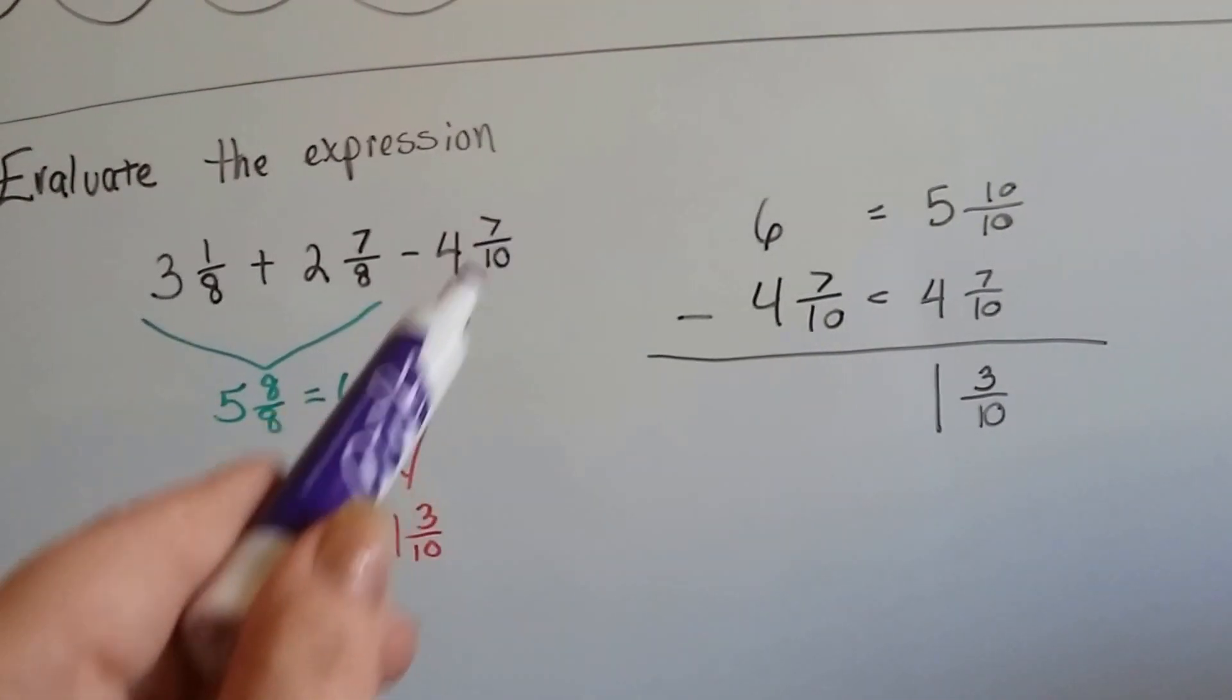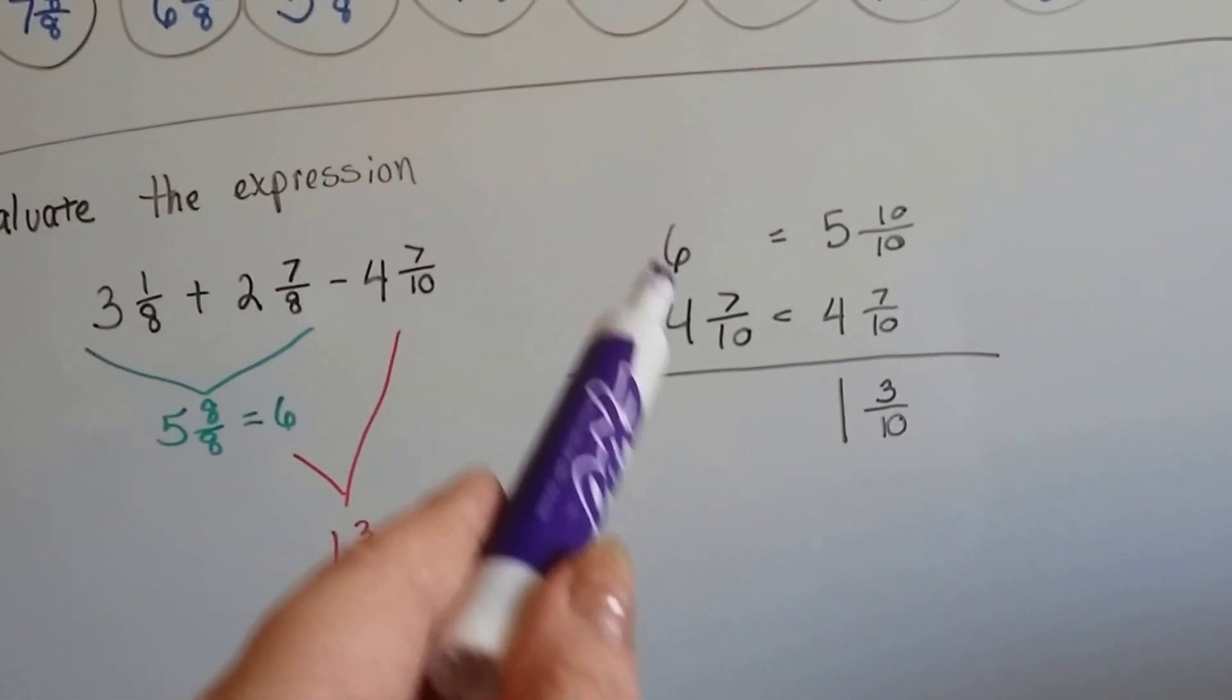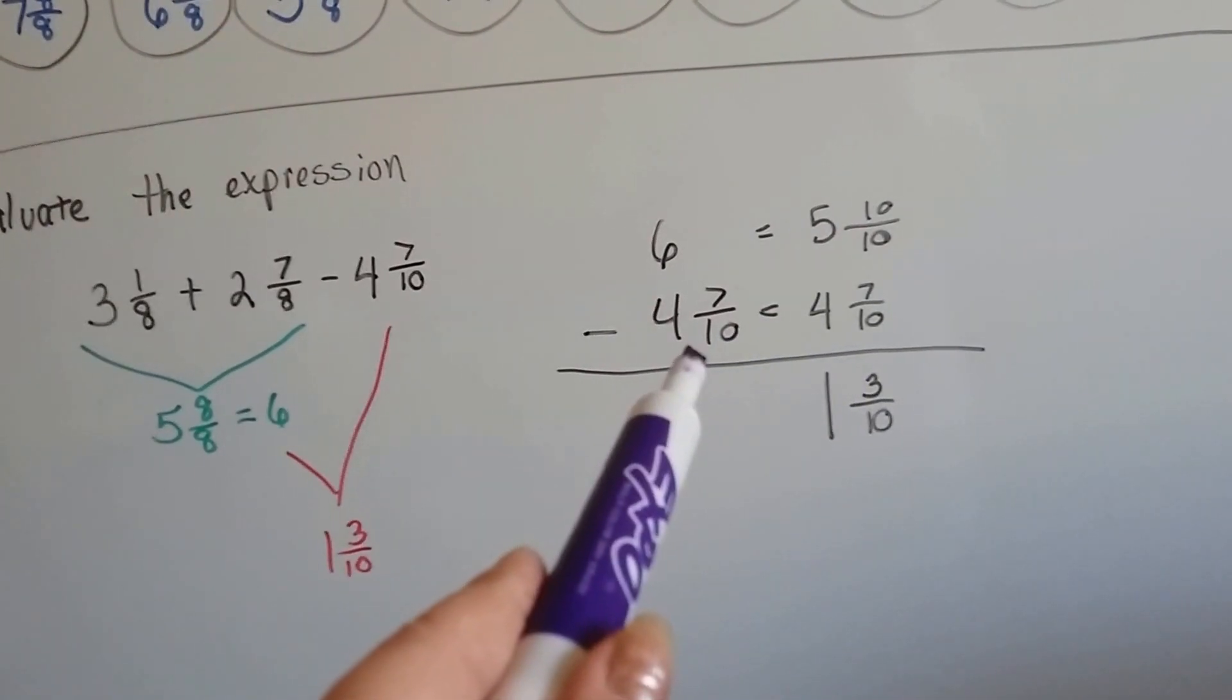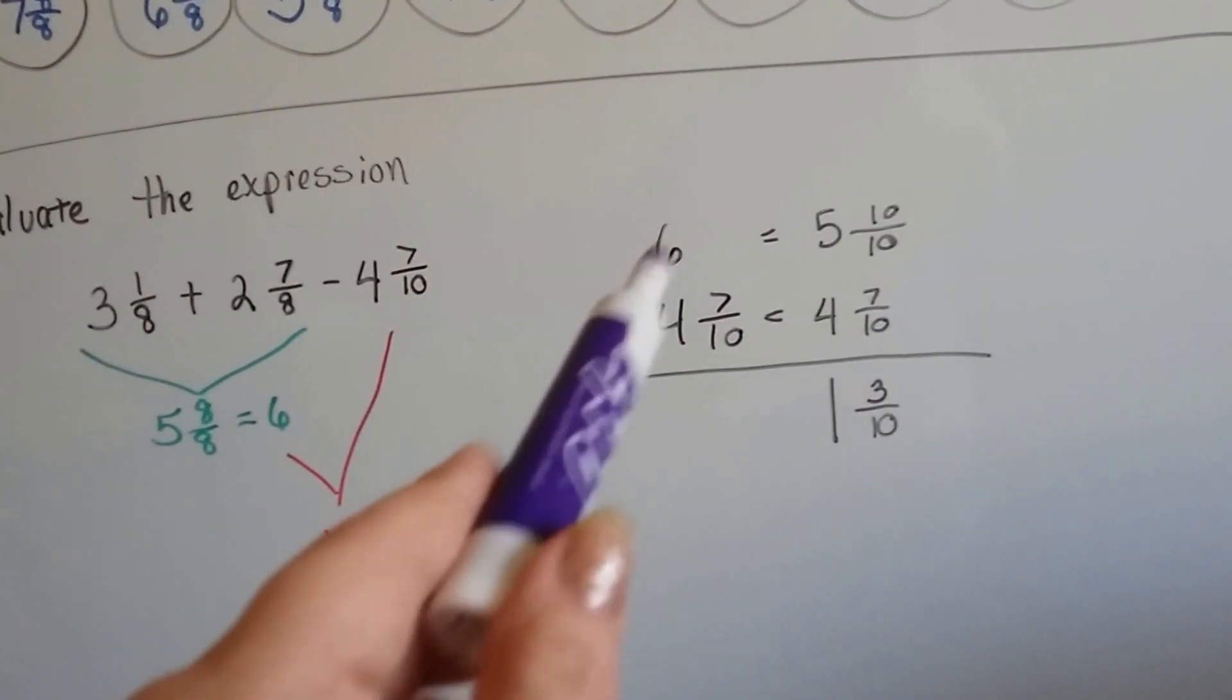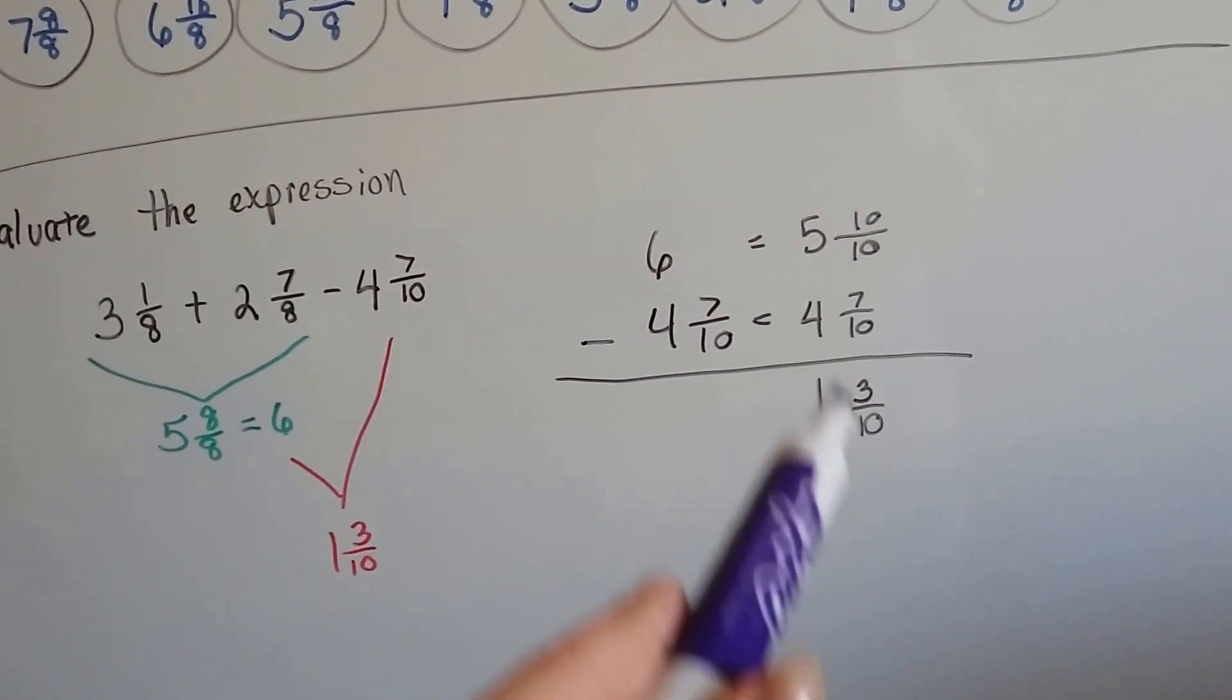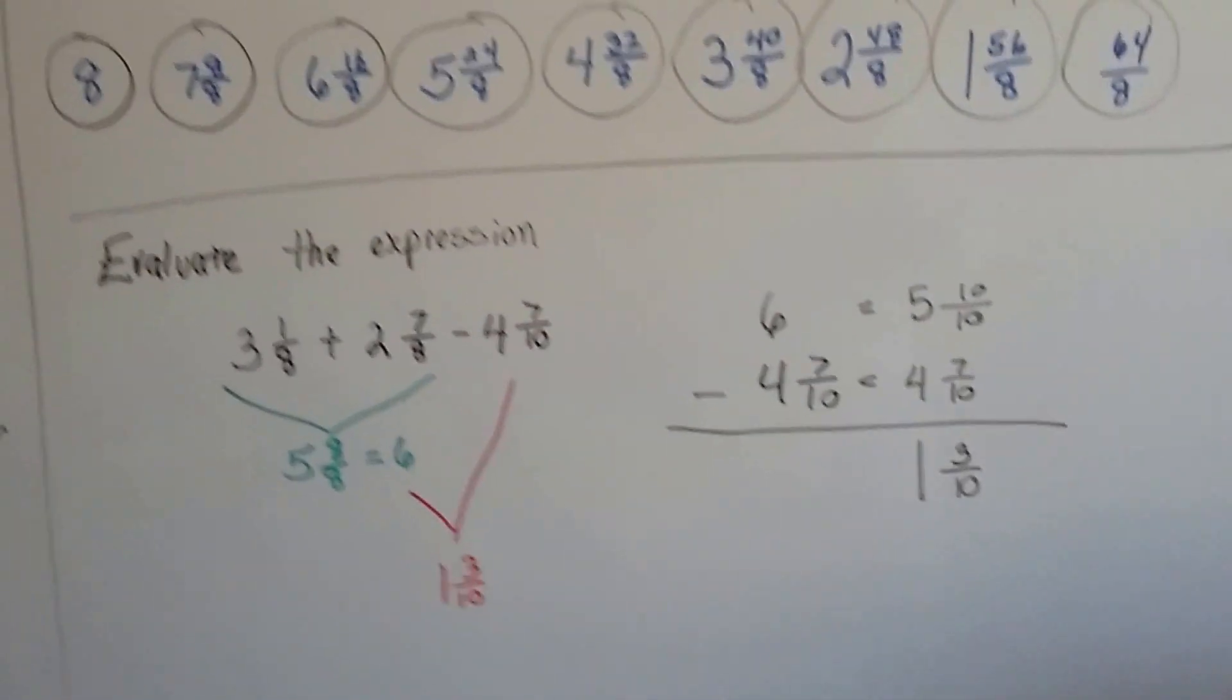Now we can take the 4 and 7 tenths away, but we have to turn this into 5 and 10 tenths based on that denominator. We pulled one away and made 10 tenths so that we could do the subtraction. We get 3 tenths. 5 take away 4 is 1, and our answer is 1 and 3 tenths.